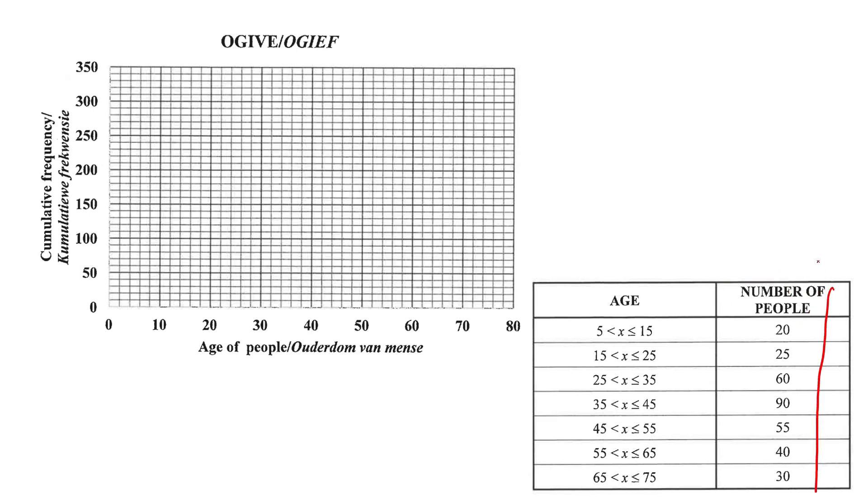And so here you would say 20, then 20 plus 25 is 45, and then 45 plus 60 is 105, and then 105 plus 90 is, wait, 195. And then 195 plus 55 is 250, 250 plus 40 is 290, and then 320. We said there were 320 people, so if you don't get 320 down there something has gone wrong.